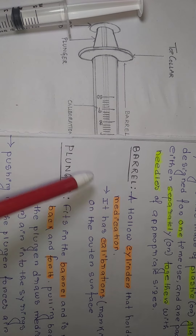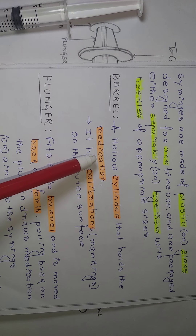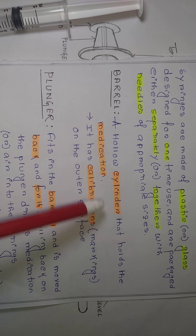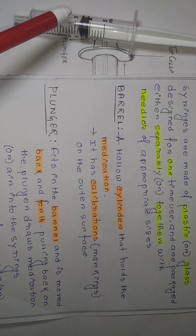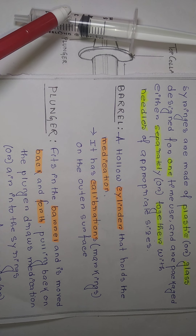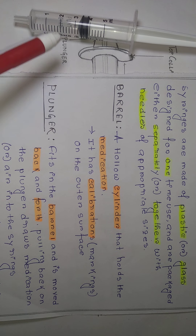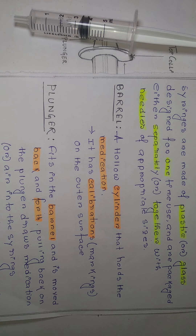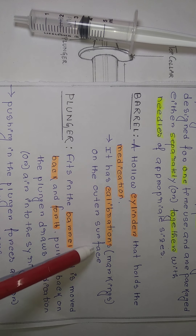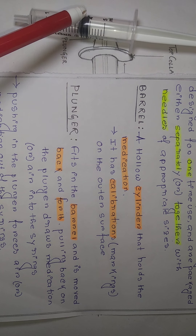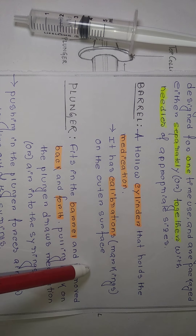What is the barrel? This portion is called barrel — it is the part containing the medication or drug. It has a calibration mark. Through the calibration mark we come to know how much medication to inject into the patient body, or how much sample to collect from the patient body — for serological test or hematological test, for biological investigation purpose. The calibration mark is on the outer surface of the barrel.